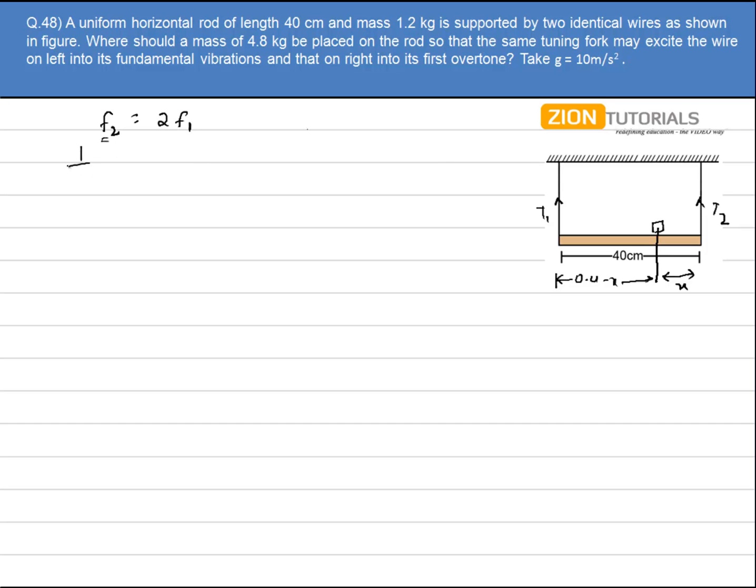So I can write it as 1 by 2L, that is the total length, under root of t1 by mu1, and that is equal to the root of t2 by mu2 into 1 by 2L. So it gets cancelled.